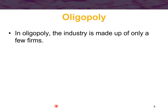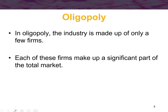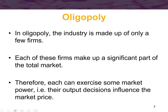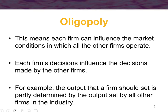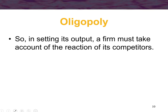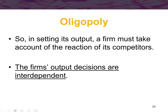In an oligopoly there are several large firms — there could be thousands of firms in the industry, but three or four control most of the market. Because you have three or four firms with large market share, they have market power, meaning they can use their supply to impact market price. When one firm sets output, it must take into account the reactions of its competitors. If you increase output, what will your rival do? This interdependency means one firm's actions impact other firms.